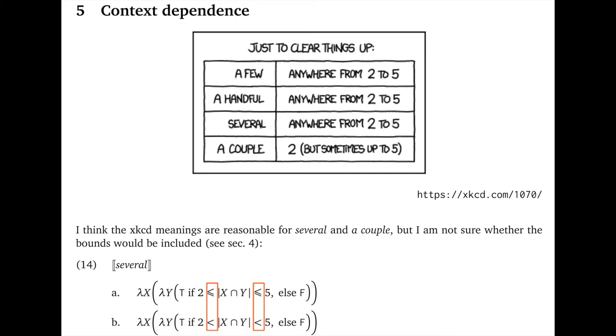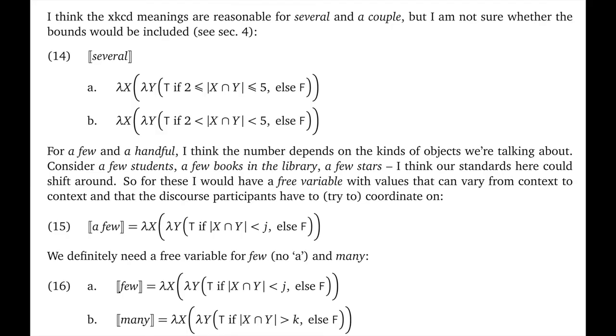Now, for these items, it may not matter that much because they seem to be inherently approximate. And so it doesn't make sense to quibble about the bounds, especially the upper bound, where six is surely going to count as a few in almost any situation in which five does. But we can also ask whether these meanings are even correct. Now, to me, they seem reasonable for several and a couple. But my hunch is that they're not sensitive enough to the items we're talking about when we get to a few and a handful.